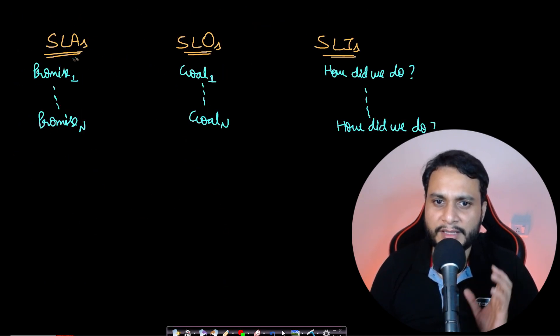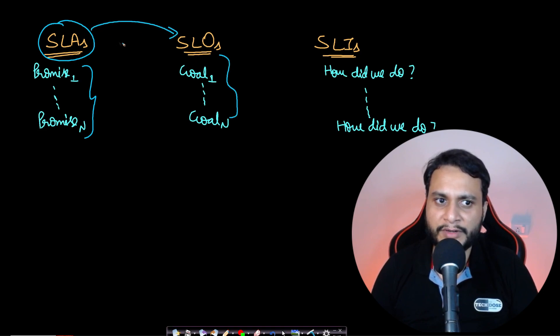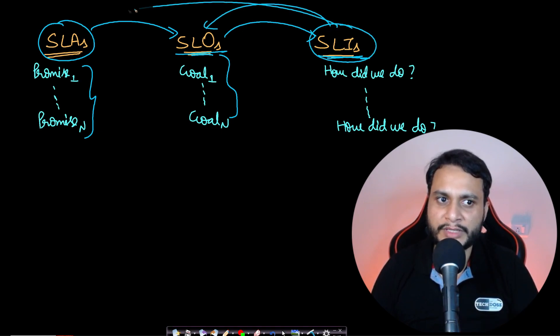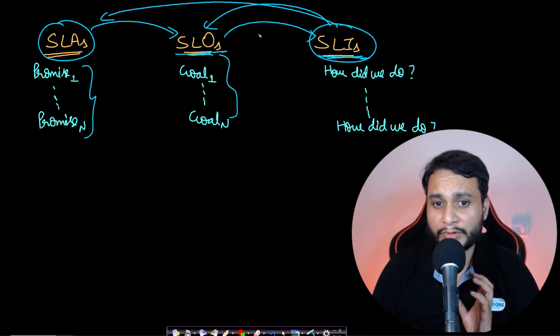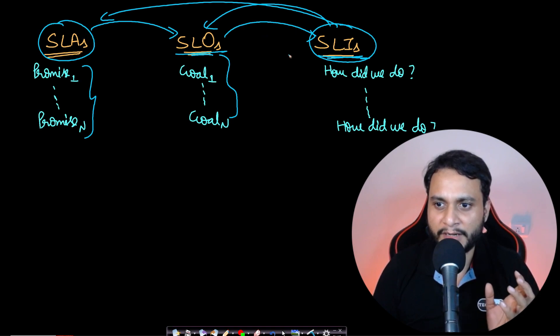So just to summarize the SLAs, SLOs, and SLIs: we can say that SLAs are n number of promises we make, and then the SLOs are some of the points which are filtered out from the SLAs and actually taken as the objective. So these are the goals which are given to the tech team. And the SLIs are actually the real-time indicators - so how are we doing or how did we do? So these SLIs will be compared with the SLOs and the SLAs, and we will see about the compliance according to what was the promise made and what are we delivering. This will actually showcase the quality of service.